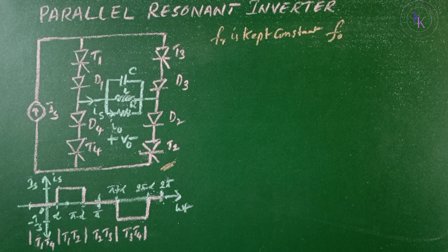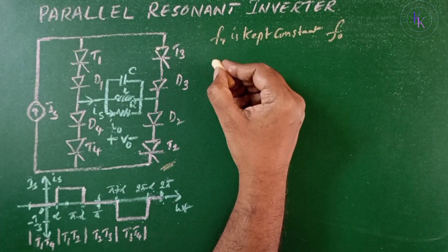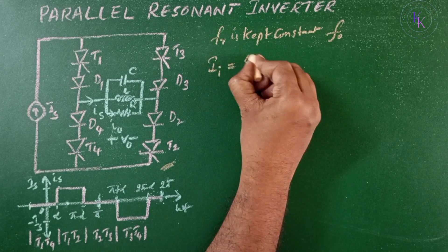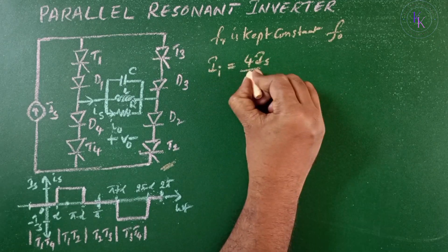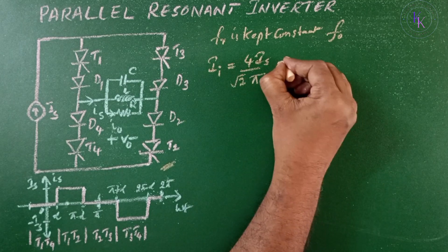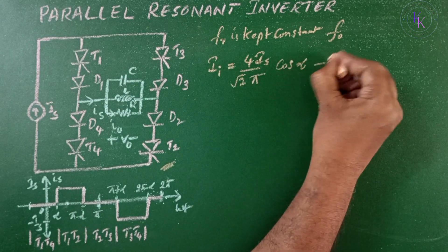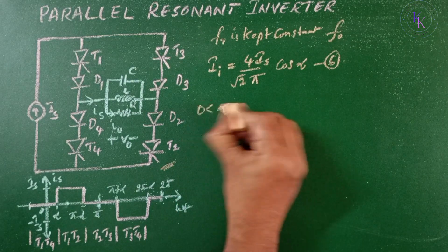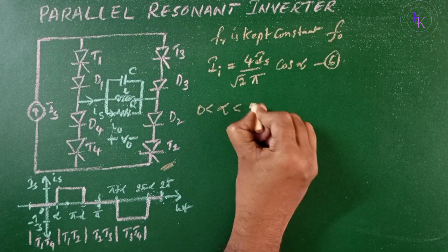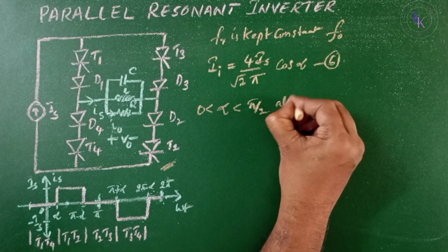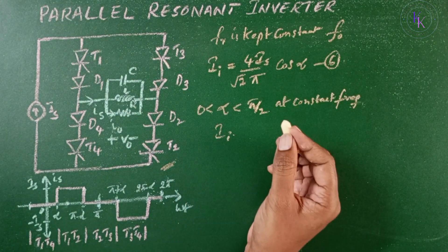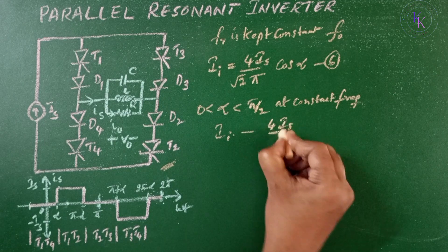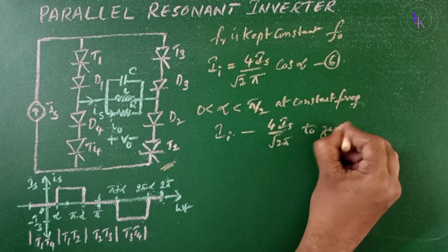The RMS fundamental input current I is given by (4Is/π)√(cos α), equation 6. By varying α between 0 and π/2 at constant frequency, the current I can be controlled from 4Is/(√2π) to 0.